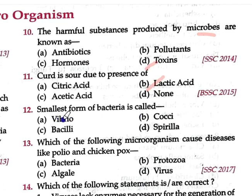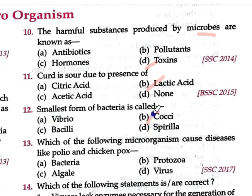Smallest form of bacteria is called — A: Vibrio, B: Cocci, C: Bacilli, D: Spirula. Option B is correct. Cocci are the smallest bacteria with a size of 0.5 to 1 micrometer in diameter — they are round in shape. If we talk about the smallest known bacteria overall, that is Mycoplasma, but in terms of shape-based forms, the smallest form of bacteria is called Cocci.